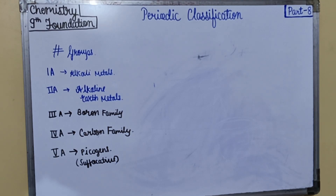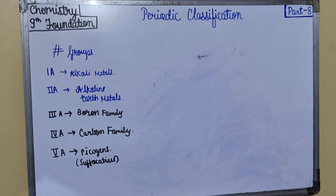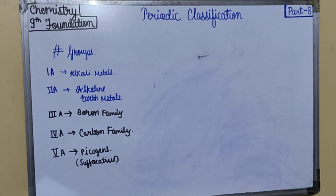Fifth A group is pnicogens. Pnicogen is a Greek word meaning suffocation, as the hydrides of this group — NH3, PH3, AsH3 — have a pungent odor and when inhaled cause suffocation. This group is called pnicogens.